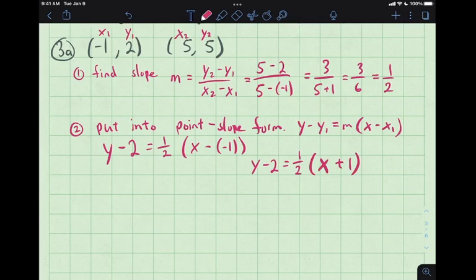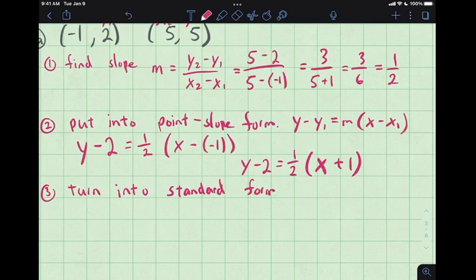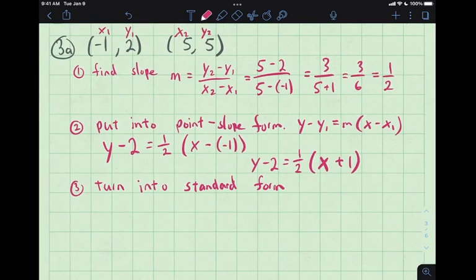And we can simplify this a little bit more. We can write that as y take away 2. Our slope here is 1 half x plus 1. 3.